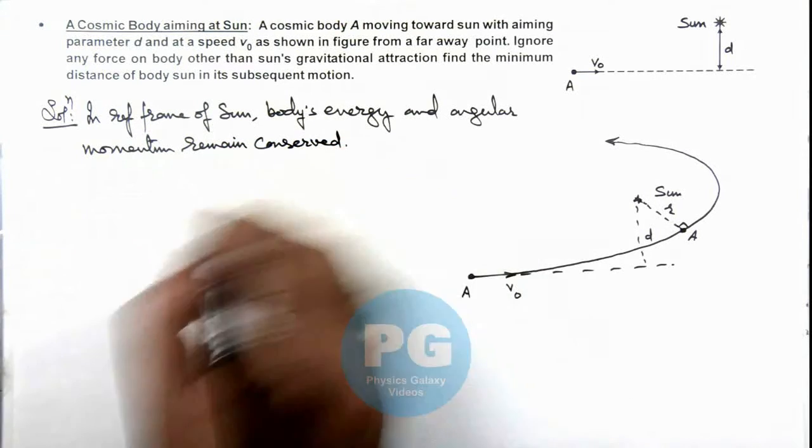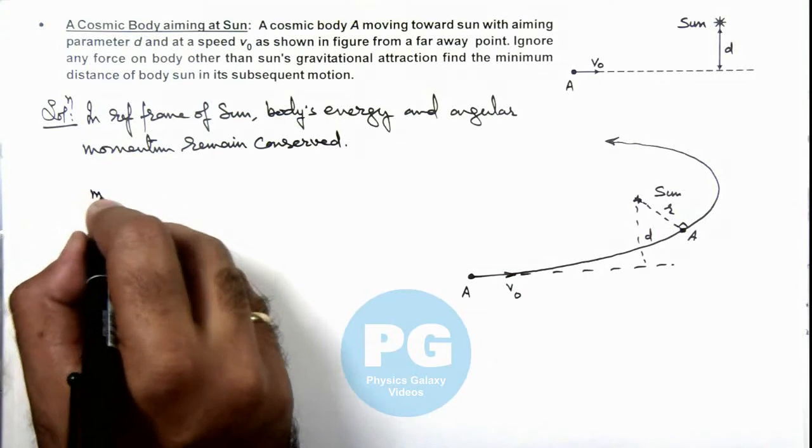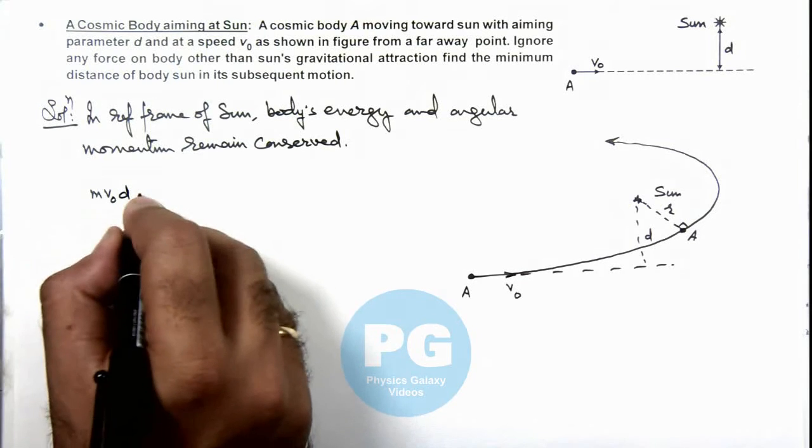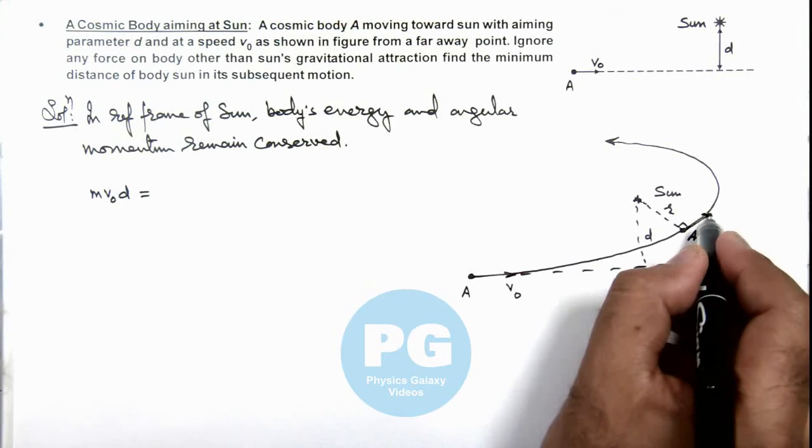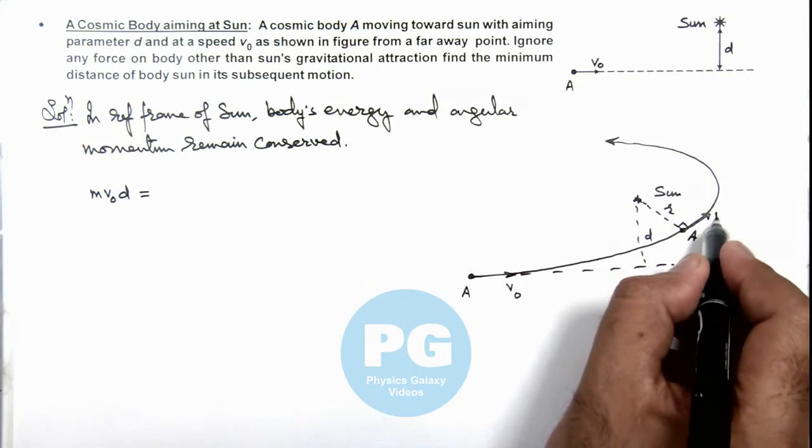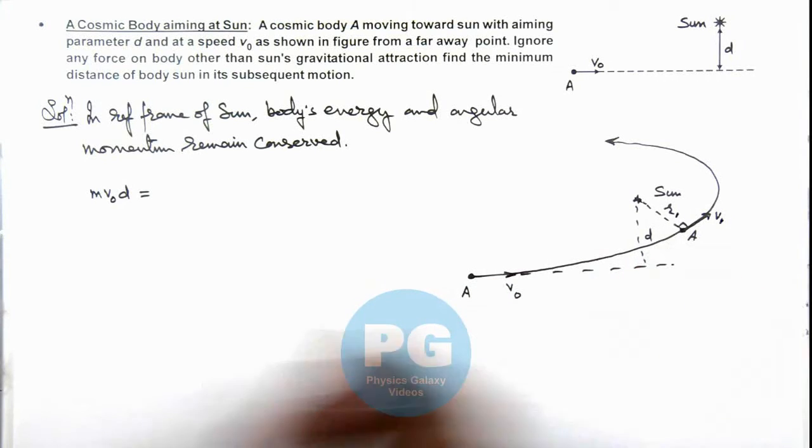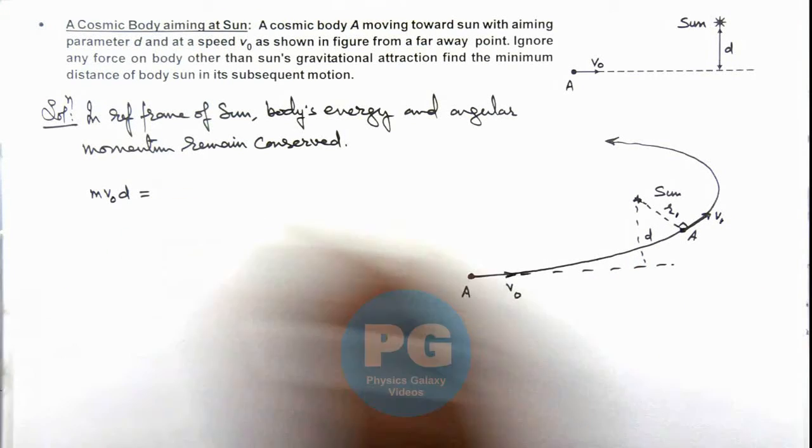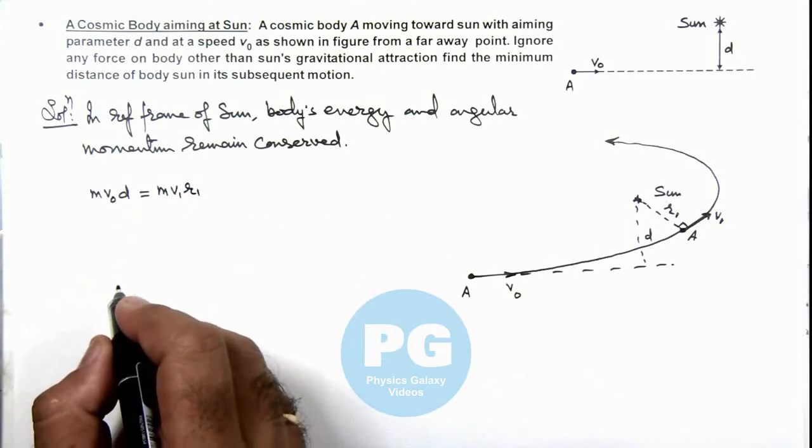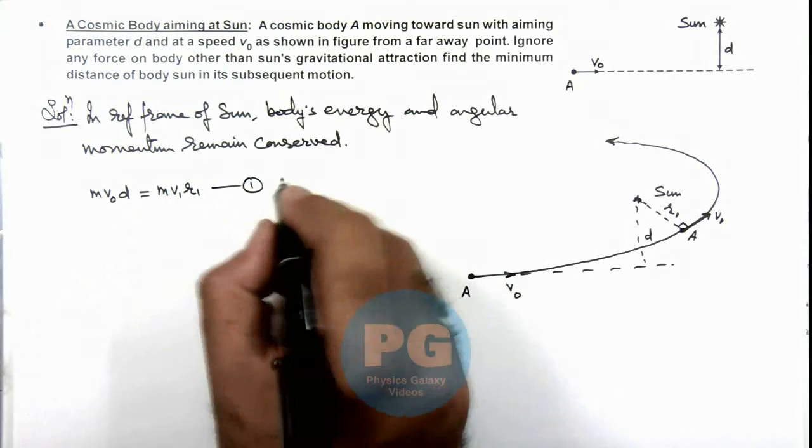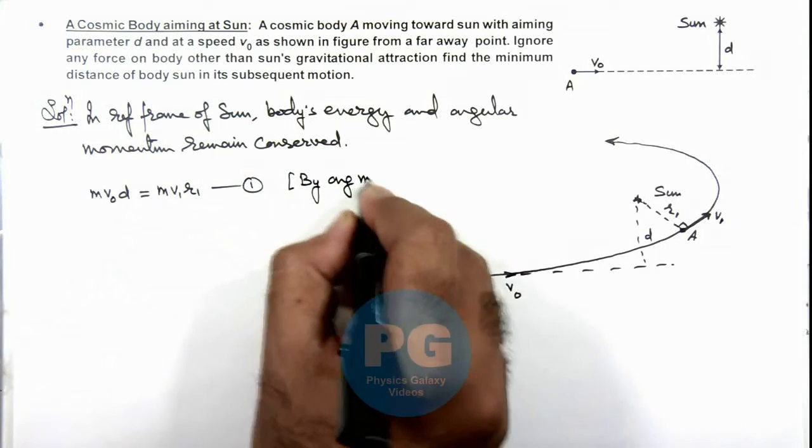So in this situation we can write initial angular momentum of body was m v not d, which must be equal to the angular momentum when it is at the distance of closest approach where speed is say v1 and the distance is r. We can also denote it as r1, so angular momentum at the closest approach point is m v1 r1. So this is equation 1, which we have written by angular momentum conservation.